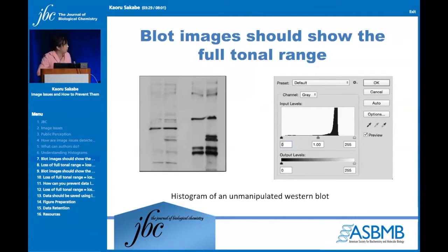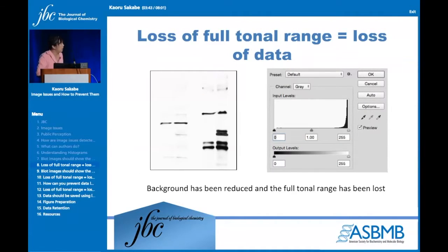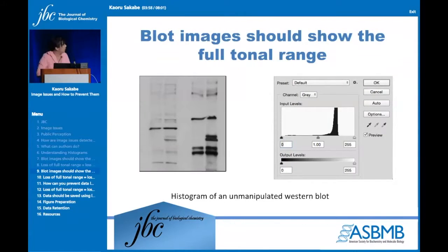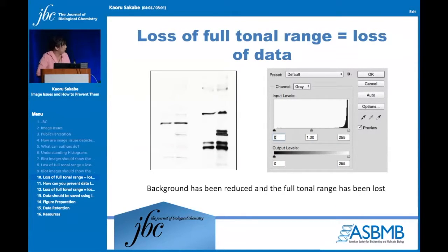This is what a histogram looks like for a Western blot that has not been manipulated — no pixels in the completely black range, nothing completely in the white range, with a lot of distribution in the gray area. When you drop the background, you adjust it so you see mostly white background, and the histogram shows mostly white pixels. Comparing the unmanipulated blot to the manipulated blot, you can see that you've lost a lot of the subtle differences in your Western. So you want to prevent that.